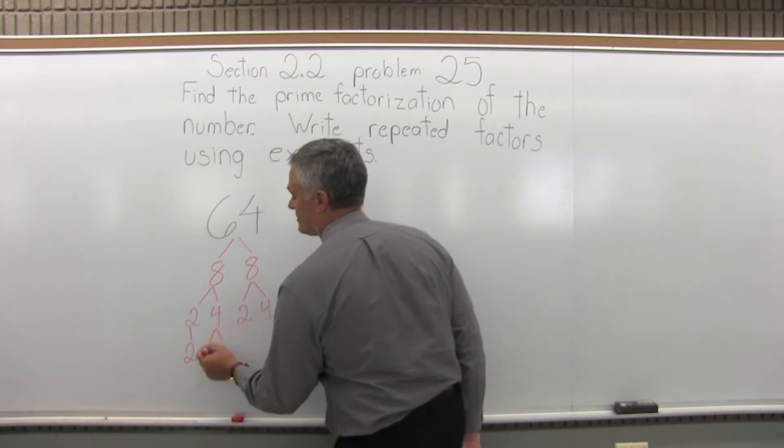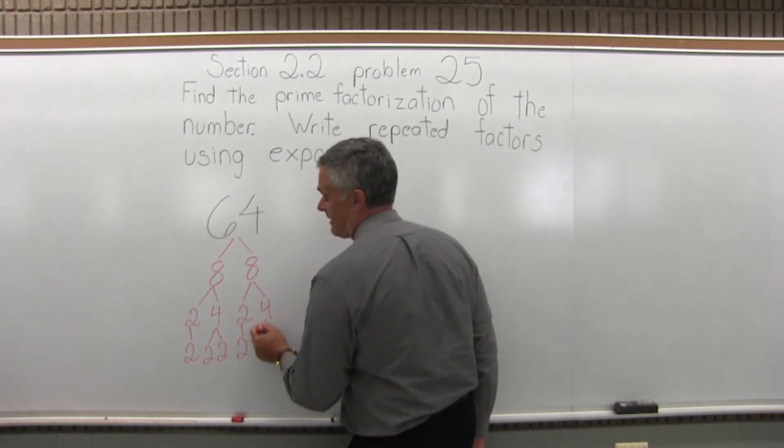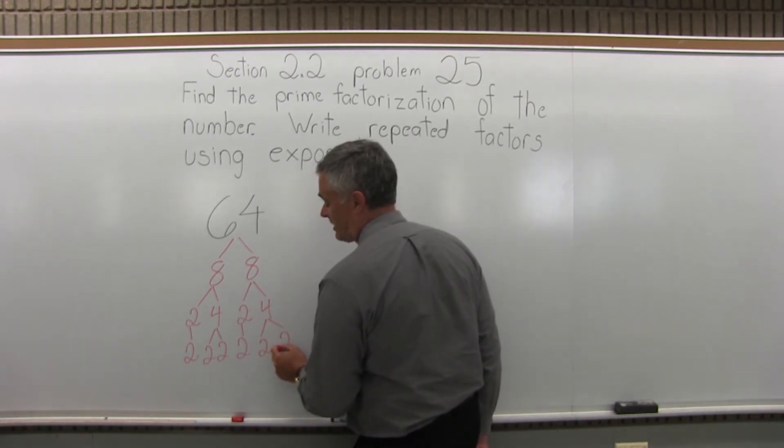The 4 next to it will split into 2 times 2. The next number over is a 2, which is already prime, so it will come straight down without splitting. And then the last number on the right is a 4, which will also become 2 times 2.